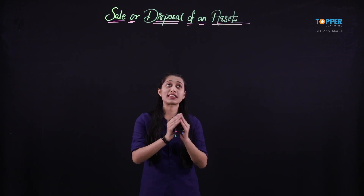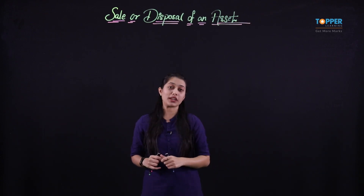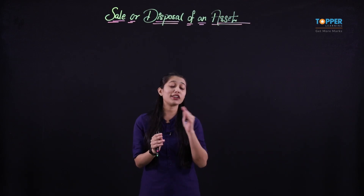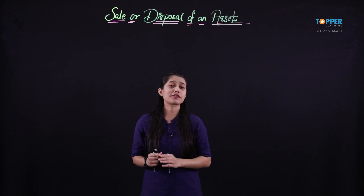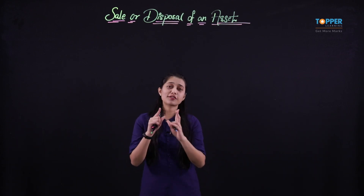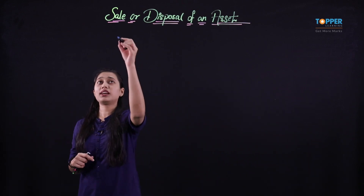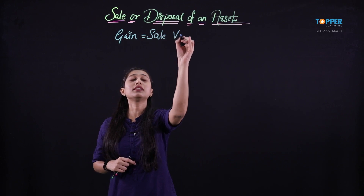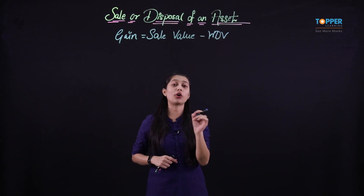Similar is the case when we talk about sale of an asset, but here we are not going to consider the purchase price or the cost price. Instead, we are going to compare the sale value and the WDV — that is the written down value. We very well know that while recording the asset and recording depreciation, we go on reducing the value of the asset by the amount of depreciation year by year, and what we get is the WDV on a particular day. Therefore, while identifying the gain or loss, firstly we will have to identify the WDV and then compare it with the sale value. If there is a gain, the sale value is going to be greater.